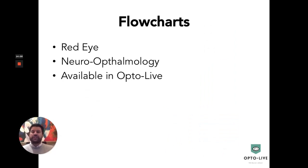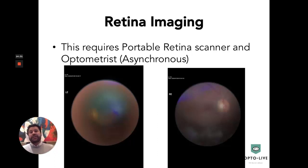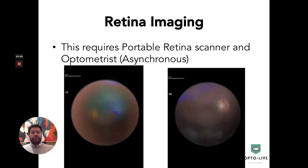We also have certain flowcharts available inside the software for red eye and neuro-ophthalmology, which help us reach our diagnosis more quickly. For retina imaging, this is asynchronous — meaning we cannot see results live — but it can be done using a portable retina scanner and an optometrist sent to either a vision center where multiple patients can be seen, or to a patient's home, to capture images.